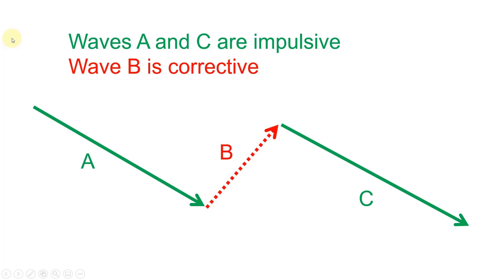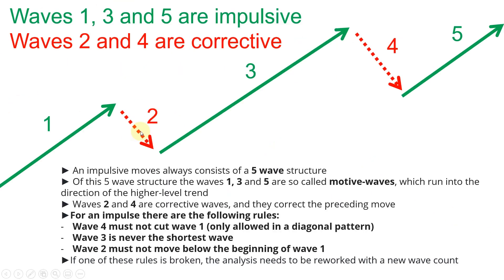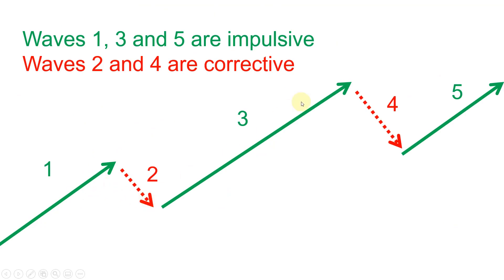Hello and welcome to another technical analysis tutorial about the Elliott Wave method. Today I want to talk about the ABC correction, which is the second part of this Elliott Wave tutorial. In the first part we talked about the impulsive wave structure — a five-part wave structure.